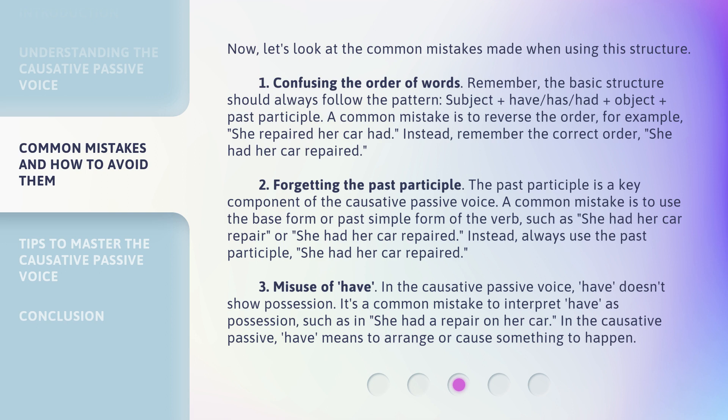Number two: forgetting the past participle. The past participle is a key component of the causative passive voice. A common mistake is to use the base form or past simple form of the verb, such as 'she had her car repair' or 'she had her car repaired.' Instead, always use the past participle: 'she had her car repaired.'